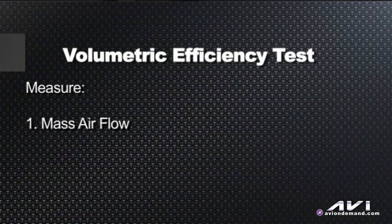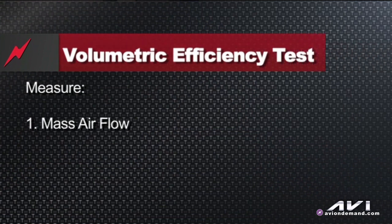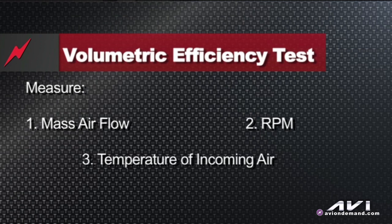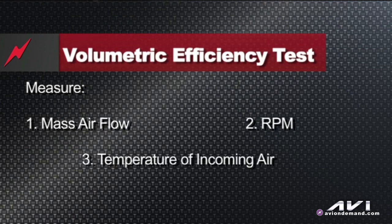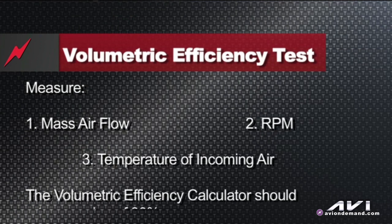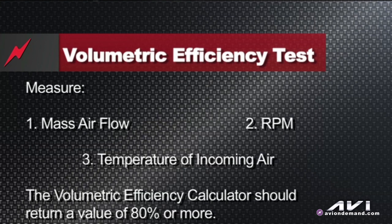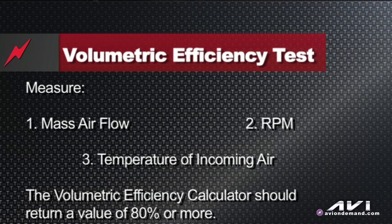The other test to confirm a breathing problem is a volumetric efficiency test. In a volumetric efficiency test, we're going to look at mass air flow, RPM, and incoming air temperature on the scan tool. We'll plug that into a volumetric efficiency calculator, and we're hoping that our VE number is greater than 80%.